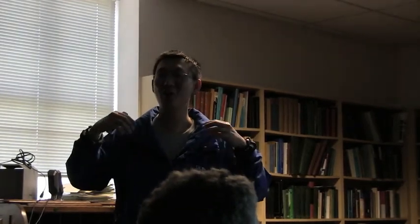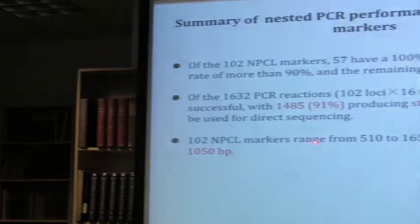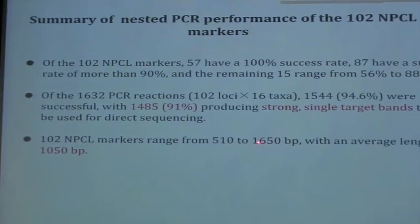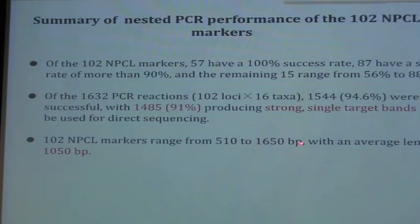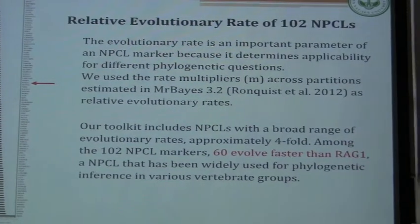When I was here I was trying to do nuclear gene work and I was facing a blank gel every day. When I see this result I feel very happy — finally we don't need to spend too much time on the wet lab work. We can focus our energy on question design and data analysis, not the wet lab. Save some energy! These 102 markers range from 100 bp to 1,650 bp, with an average length of about 1 kb, so it's very easy to sequence from both sides.